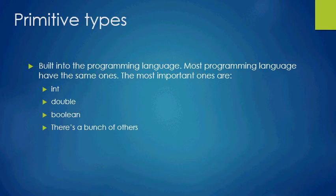Let's go a little more in depth on primitive types. Primitive types are built into the programming language, and most programming languages have the same ones. The most important ones you need to remember right now are int, double, and boolean — and also know that there are a bunch of others, but int, double, and boolean are really the most important ones, the ones you can't do without.